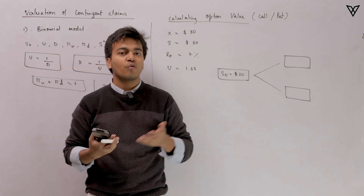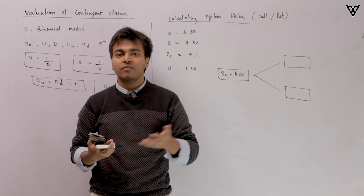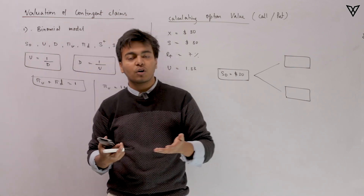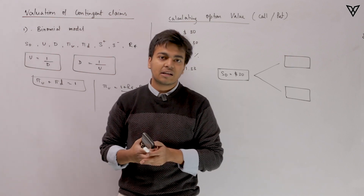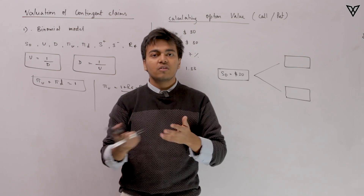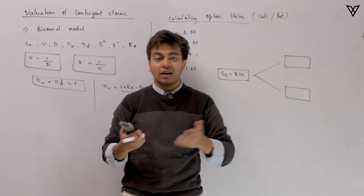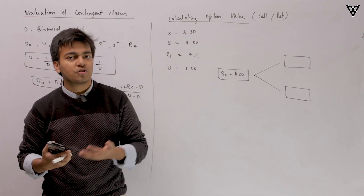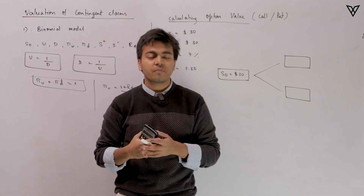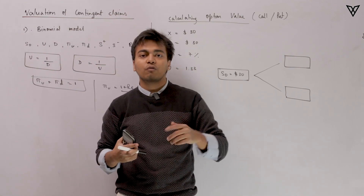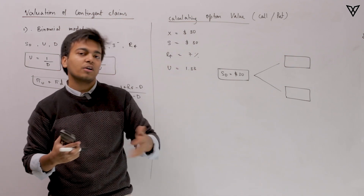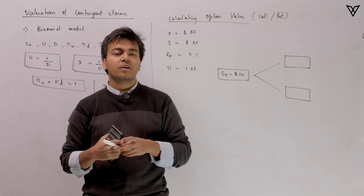It is just an extension of what you studied in Level 1, where you used the binomial model to calculate the value of the call option and the put option. Here we'll be learning for both European options as well as American options. Wherever early exercise is beneficial, we'll learn about American options. But first, we'll be talking about European options, and specifically the one-period model before progressing to the two-period model.